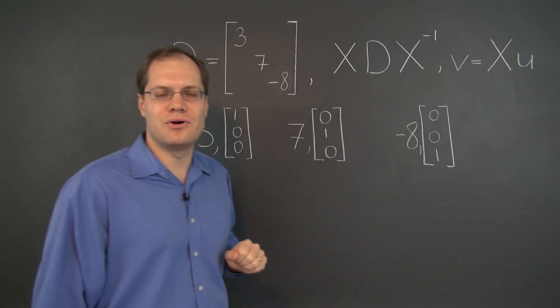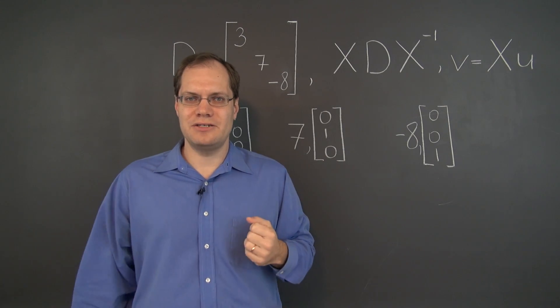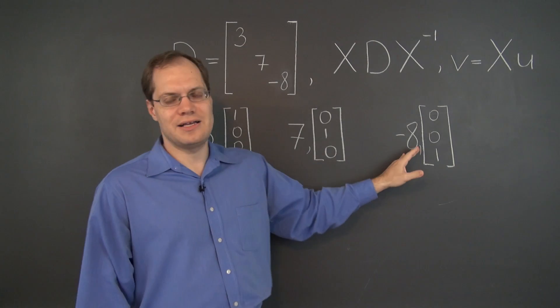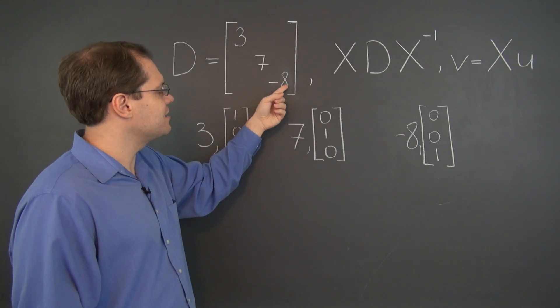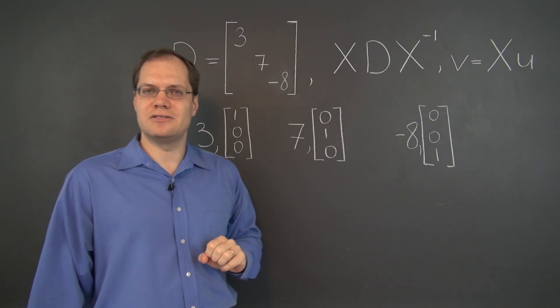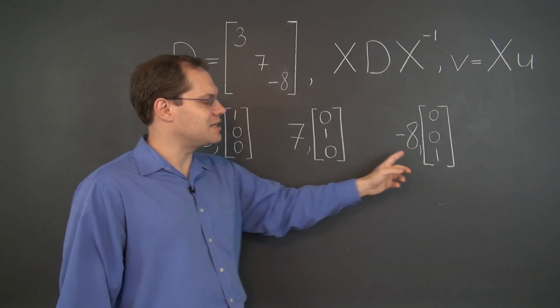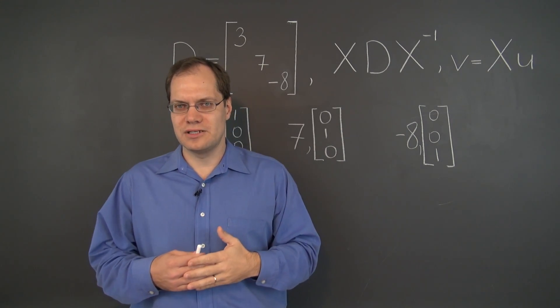So right here, on the board, we pretty much have the recipe for constructing that desired matrix, because if we want to have certain eigenvalues, let's say 3, 7, and -8, we should just put them on the diagonal and stick this diagonal matrix into a similarity transformation, and that would guarantee that we will get the eigenvalues 3, 7, and -8. So that guarantees that we get the eigenvalues that we want.